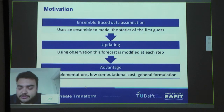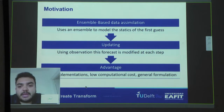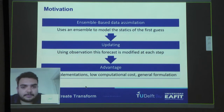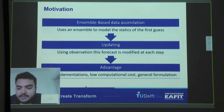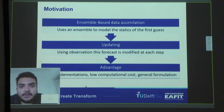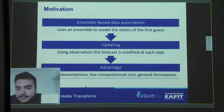First, I want to remind you what data assimilation is. Data assimilation is the process in which we use a model and observations to improve the performance of the model. There are two big families of methods in data assimilation. On one hand, we have variational data assimilation — 4D-Var, 3D-Var, and similar methods — that look to minimize a cost function with respect to the model and the observations. On the other hand, we have ensemble-based algorithms, also called the statistics family.